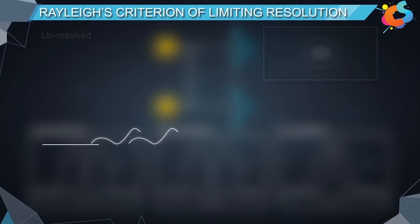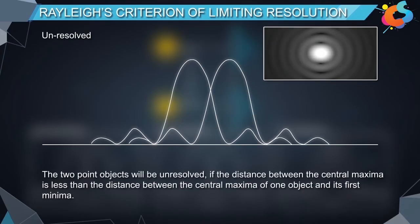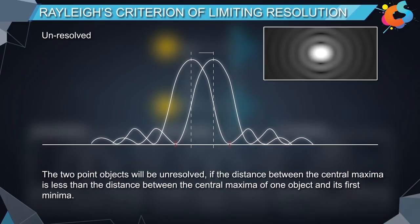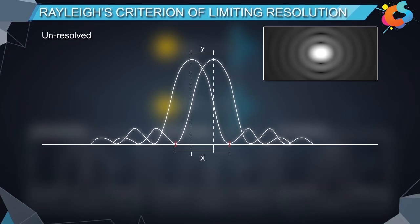Third criteria: the two point objects will be unresolved if the distance between the central maxima is less than the distance between the central maxima of one object and its first minima. Therefore, if Y is less than X, the objects are said to be unresolved.